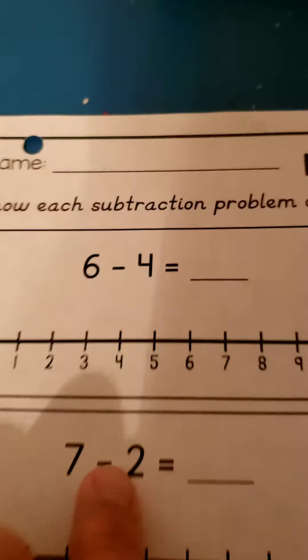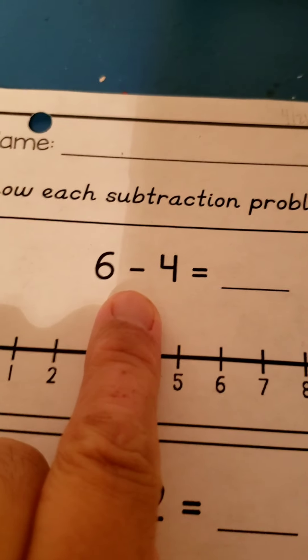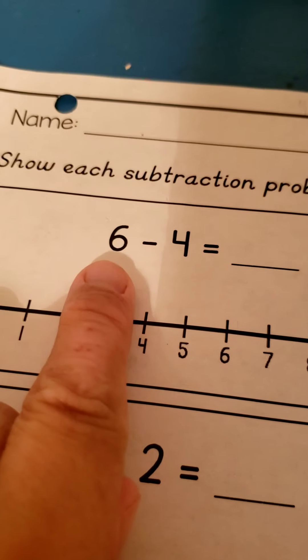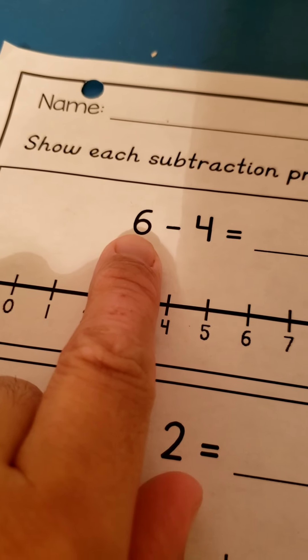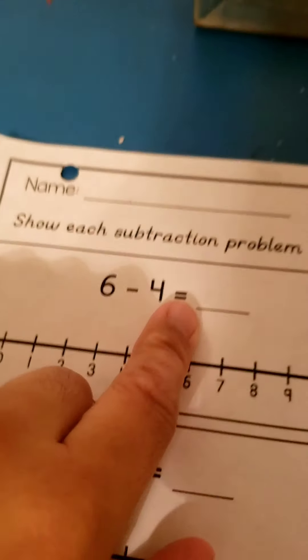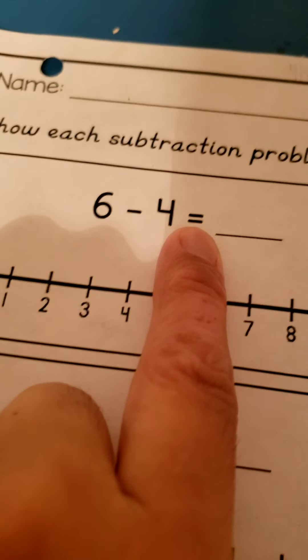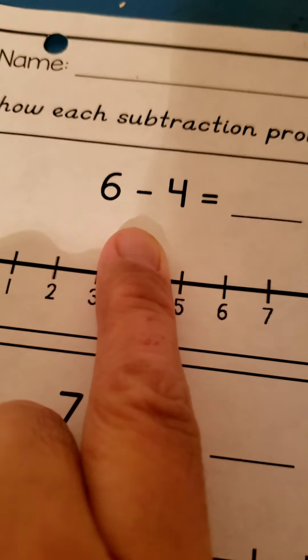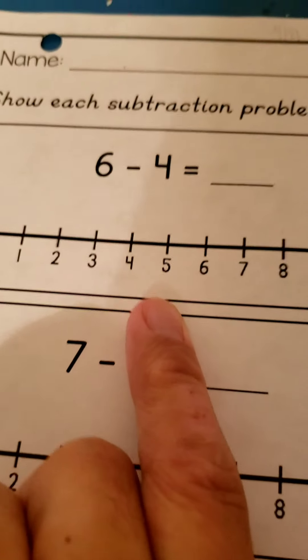So the first thing you need to do is look at the math problem. Six minus four equals - we need to find the difference. We need to find that answer, the difference. And this is really difficult for a lot of you. So that's why we have this number line.